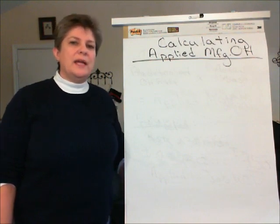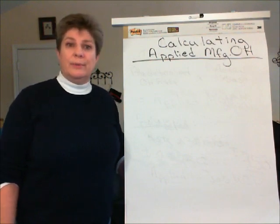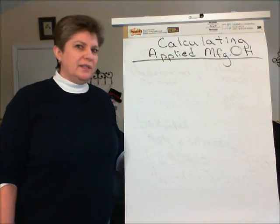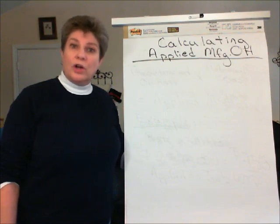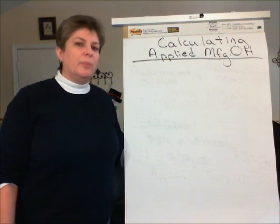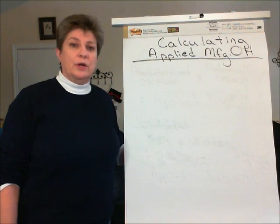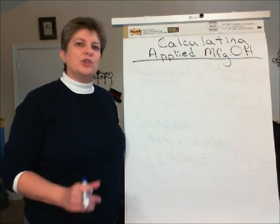Once we have come up with the predetermined manufacturing overhead rate at the beginning of the period, the next thing that happens is that as we work on jobs, we start to apply manufacturing overhead to the cost of those jobs. And the calculation is pretty simple.